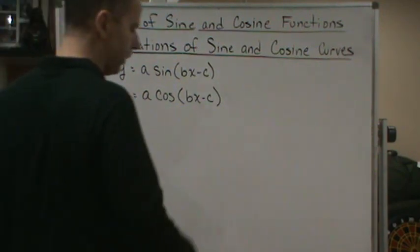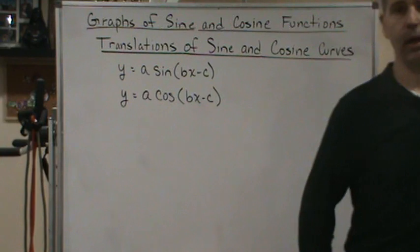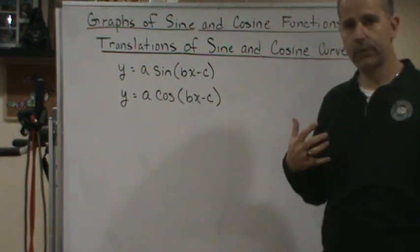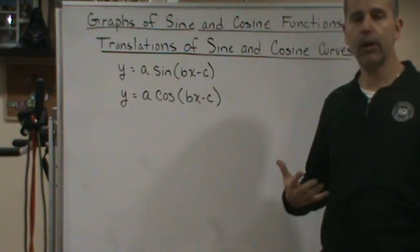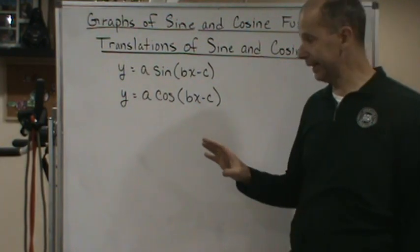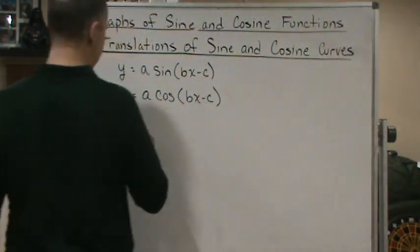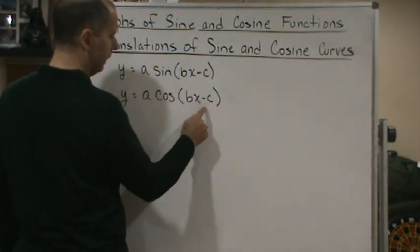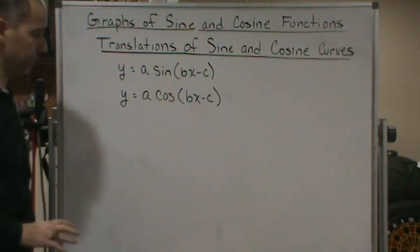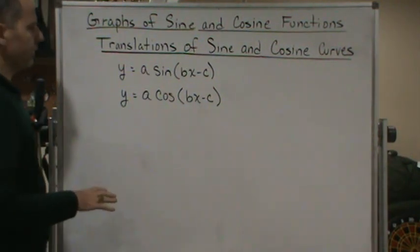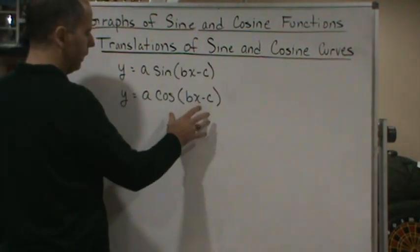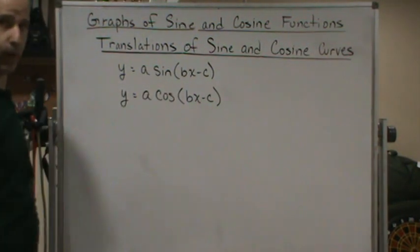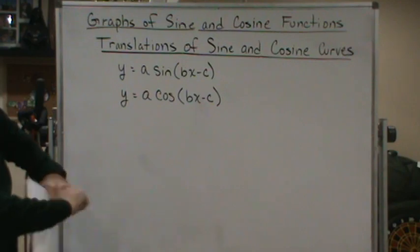Welcome back. Now we're going to talk about translations of sine and cosine curves. To better understand how this works, look at these two functions. What we're doing is adding this minus c in the argument. To understand what's going on with these functions by having this extra part in here, let's look at these functions.